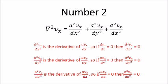Now looking at the Laplace operator of the velocity in the x direction, we have broken it down into three parts. We can apply our understanding of the left side of the Navier-Stokes equation here. Because d squared vx over dx squared is the derivative of dvx dx, then if dvx dx equals zero, so is d squared vx over dx squared. We can apply this idea to all the parts.